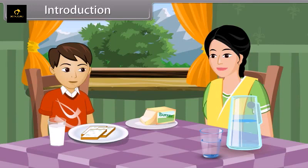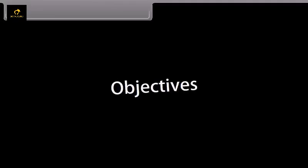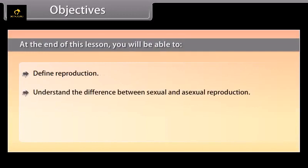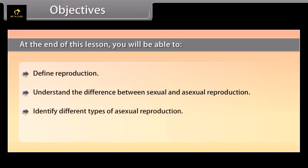How do these fungi grow? These fungi grow and form colonies on the bread through different modes of reproduction. At the end of this lesson, you will be able to define reproduction, understand the difference between sexual and asexual reproduction, identify different types of asexual reproduction, and identify various events of sexual reproduction.